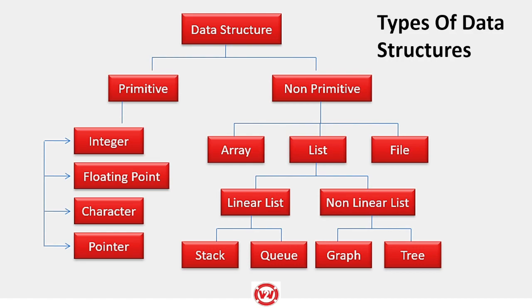Arrays are a collection of similar kinds of data types. If you have multiple different data types, you cannot put them under a single array — you need a structure. But if you have many elements of the same data type, like roll numbers or names of many students, you can use a single array to store them. A list is basically divided into two parts: linear list and non-linear list. Stacks and queues are part of the linear list, and graphs and trees are part of the non-linear list.